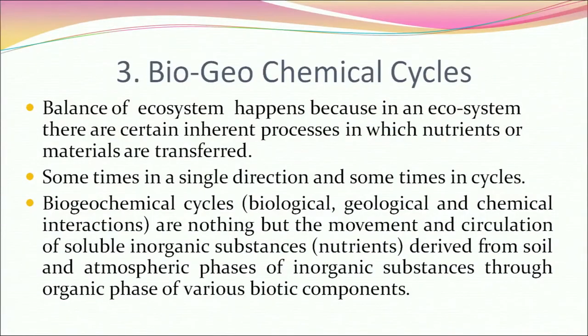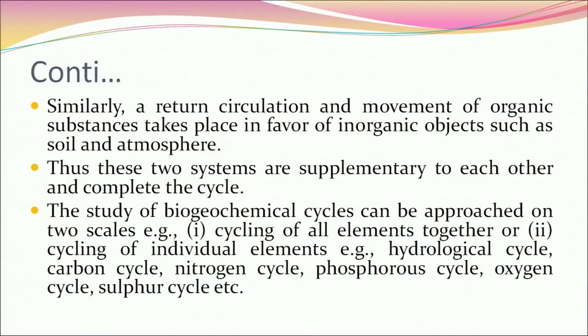Biogeochemical cycles help explain ecosystem balance. In an ecosystem, nutrients or materials are transferred — sometimes in a single direction and sometimes in cycles. Biogeochemical cycles involve the biological, geological and chemical interactions that represent the movement and circulation of soluble inorganic substances — nutrients — derived from soil and atmospheric phases through the organic phase of various biotic components. A return circulation of organic substances takes place in favour of inorganic objects such as soil and atmosphere, so these two systems are supplementary and complete the cycle.